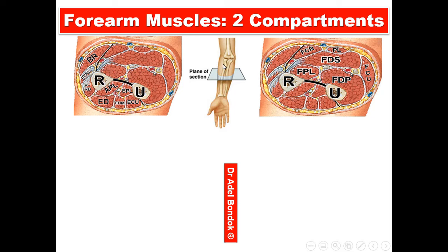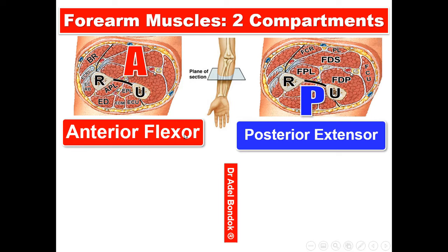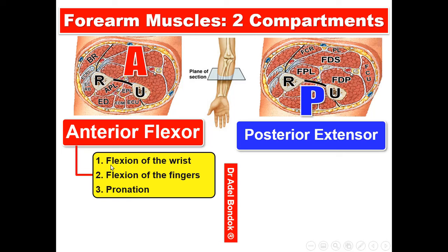The forearm muscles are divided into two compartments by the radius, the ulna, the interosseous membrane, and the intermuscular septa. The two compartments are the anterior compartment and the posterior compartment. The anterior compartment is the flexor compartment, responsible for flexion of the wrist and flexion of the fingers.